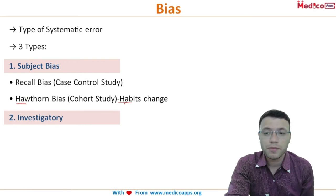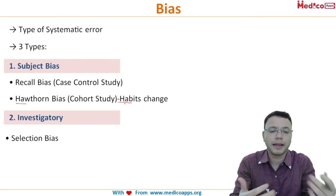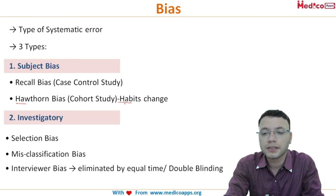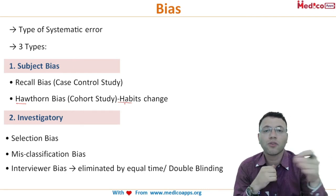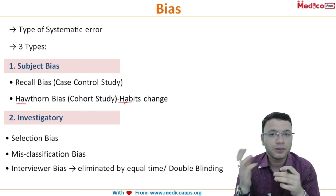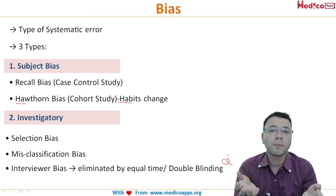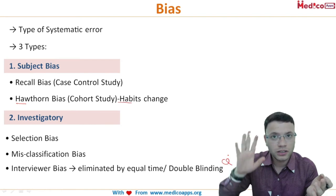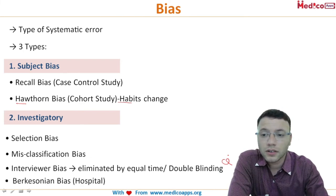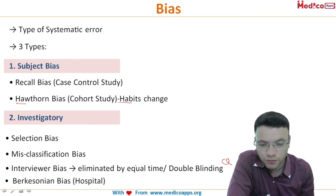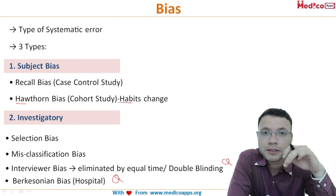Investigator bias involves the steps of selecting cases, classifying them, and interviewing them — each step can introduce bias: selection bias, misclassification bias, or interview bias. Interview bias can be reduced by giving equal time to each participant, similar to a viva. Double blinding — where the investigator doesn't know which group the participant belongs to — also reduces this bias. Berkson's bias is a hospital-based bias where admission rates differ across departments.